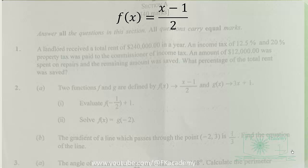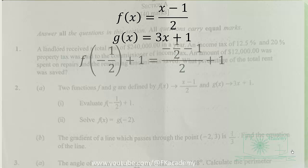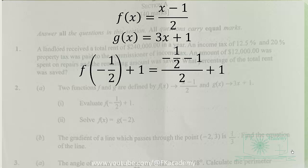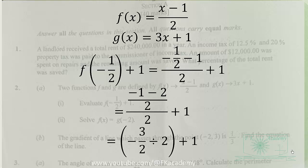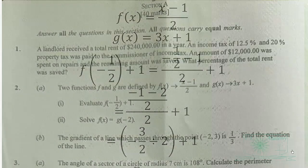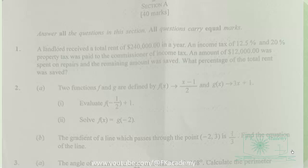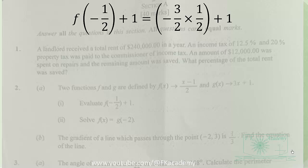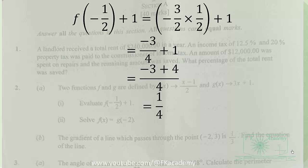We substitute −½ into f(x). Simplifying the numerator of the first fraction, the LCM is 2, giving us −3/2 divided by 2 + 1. This simplifies to −3/2 × 1/2, which is −3/4. Adding 1 and finding the LCM again, we get the result to be 1/4.